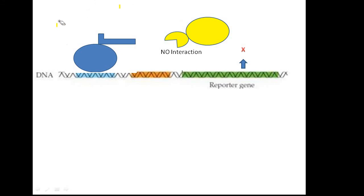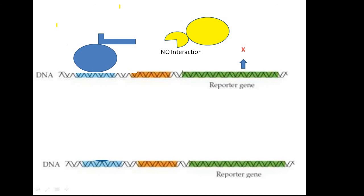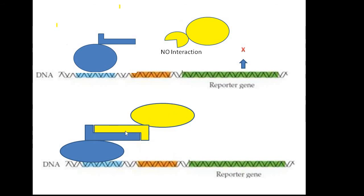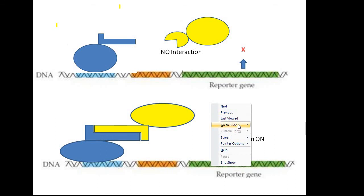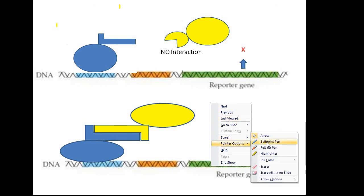In the case where there is no interaction between the two proteins, the DNA binding domain and the activation domain will not be in close proximity, so the transcription machinery will not be recruited and the reporter gene will not be activated. However, if the two proteins are interacting with each other, both domains are brought into close proximity due to the protein-protein interaction, the transcription machinery is recruited, transcription is switched on, and as a result we will obtain functional beta-galactosidase.